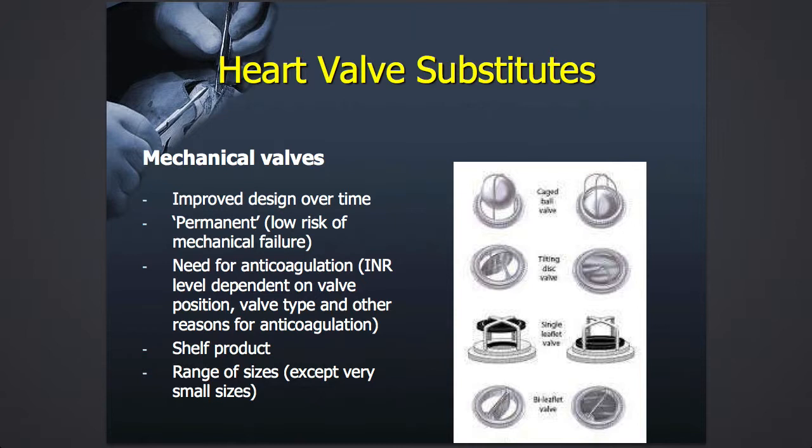A drawback is that these mechanical valves make the blood clot, so you need to be on blood-thinning medicines. The level of anticoagulation — how thin you make the blood — depends on which position in the heart we put the valve. For aortic valves we need the least amount of anticoagulation; for the mitral valve we need a little bit more. If we put them on the right side of the heart, where pressures are low and therefore there is less washing of the valve and a higher risk of clotting, we need a higher level of anticoagulation. These are permanent valves — they have been very extensively tested, and the risk of mechanical valve failure, such as a piece of metal breaking off, is almost nil. They also come in a range of sizes.